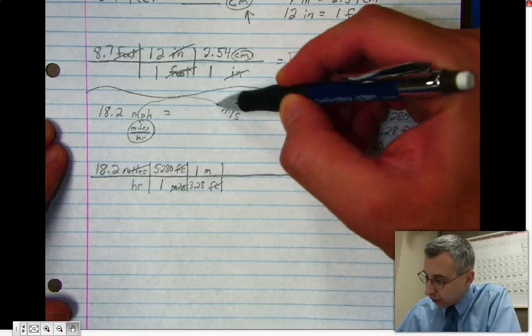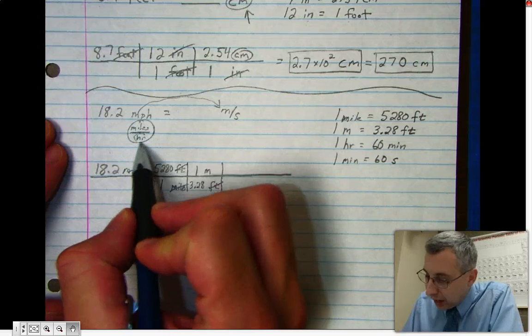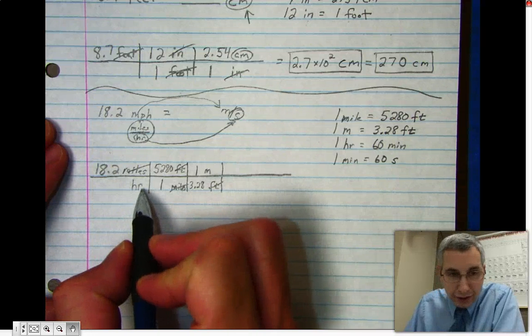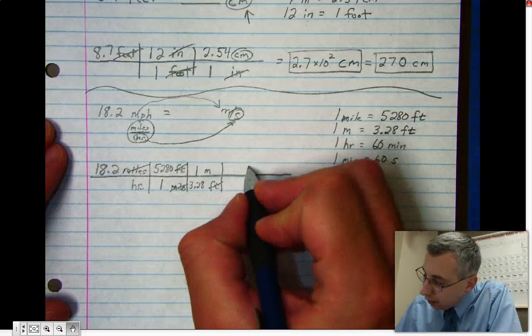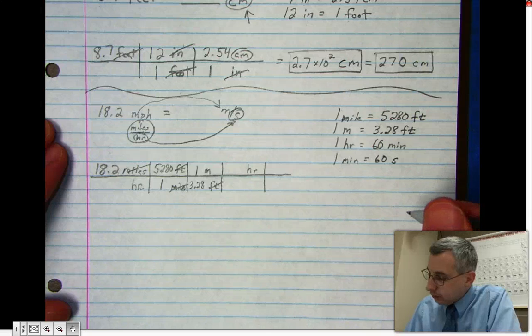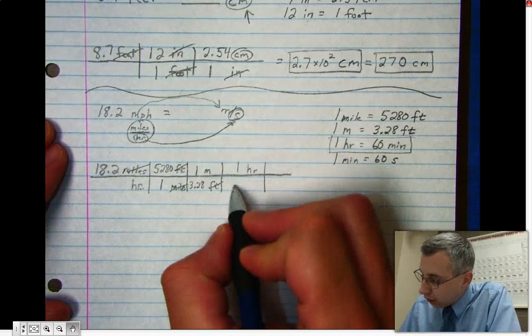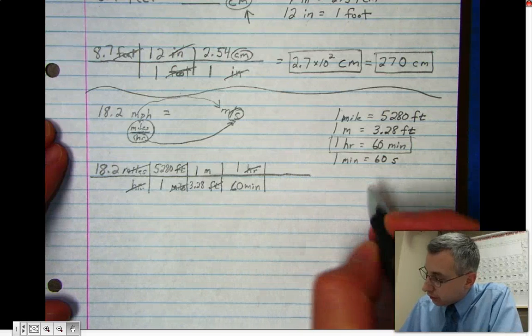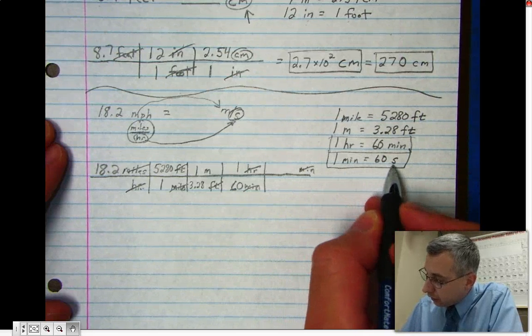I need to convert now from hours into seconds, because notice miles per hour is supposed to turn into meters per second. I have not done anything to cancel out my hours here yet. Since hours appears down here in the denominator, up here I need to write an hr for hour. One of my equivalent statements is that one hour is 60 minutes. Now these hours have cancelled. Keep going: since minutes is down here, minutes has to be up here so the minutes cancel. One minute is 60 seconds.